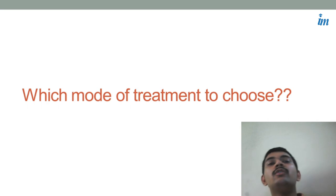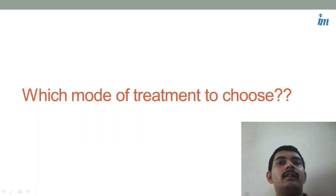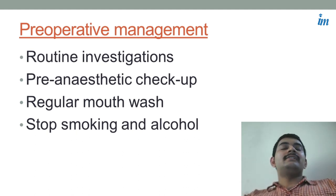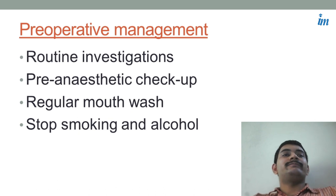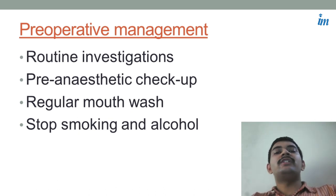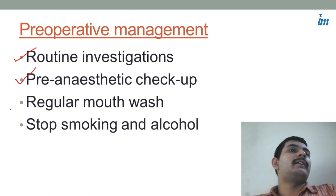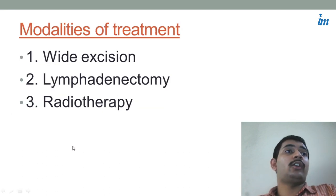Now, to decide how to treat the patient, you need to go through the treatment protocol. It is quite important to determine when to shift the patient to the OT because for cancer surgery many things have to be done. You need to take pre-management care of the patient — that includes routine investigations, pre-anesthetic checkup, regular mouthwash, and stopping smoking and alcohol. These are very important things to understand.